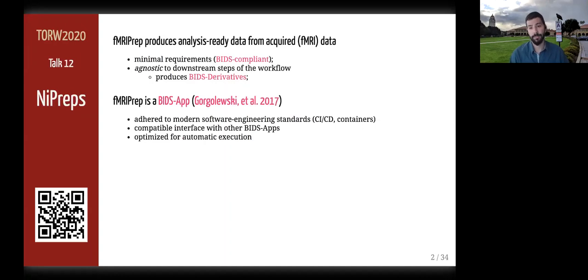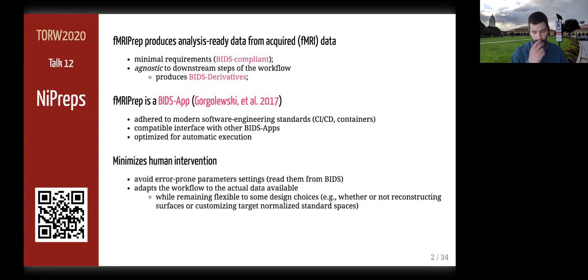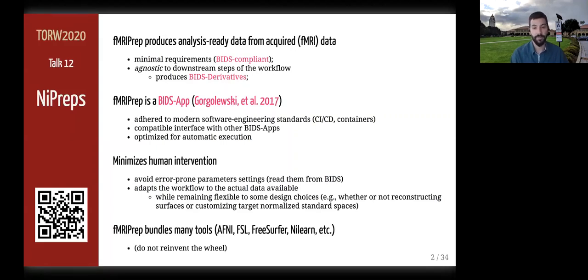fMRIPREP adopts the BIDS app specifications, meaning the software is tested with every change to the code base, and packaging, containerization, and deployment are also automated. BIDS apps are interoperable via the BIDS derivatives specification and optimized for execution in HPC and cloud environments. fMRIPREP minimizes human intervention because the user does not need to fiddle with any parameters — they are obtained from the BIDS structure — while still allowing some flexibility for the intended analysis. fMRIPREP sits on top of giants' shoulders: AFNI, FSL, FreeSurfer, and Nilearn all implement well-backed and thoroughly tested methods.